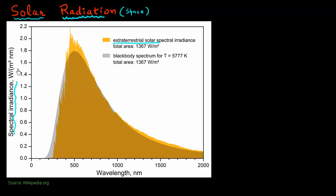The spectral irradiance has a unit of watt per meter square per nanometer. It's plotting the intensity of light — that is watt per meter square — as a function of wavelength, which is given on the x-axis.